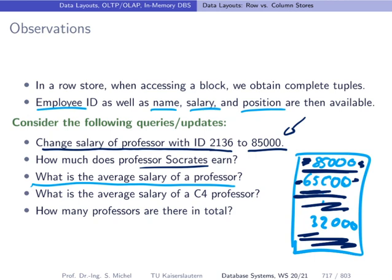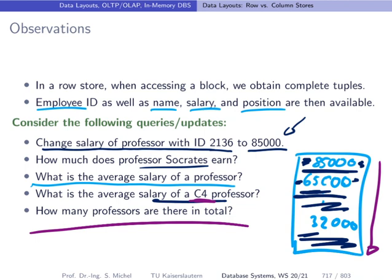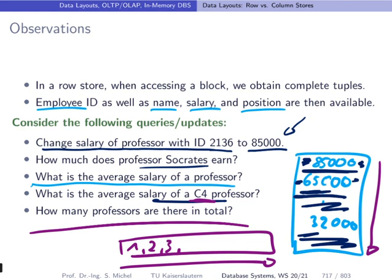If you have a query like 'what is the average salary of a C4 professor?', you also have to go through the file, but now you would also need the information about the position of the professor, so it would not be enough to have only a file with the salaries. What about a query asking how many professors there are in total? You don't need to read the entire file, because if you had one file where only the employee IDs are stored, you can just read that file. These are different types of queries, and depending on the type and frequency, one data layout decision is better than the other.